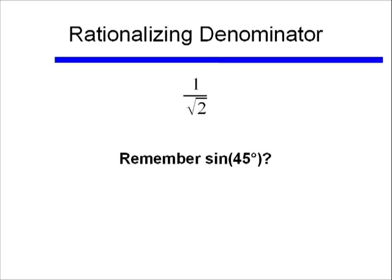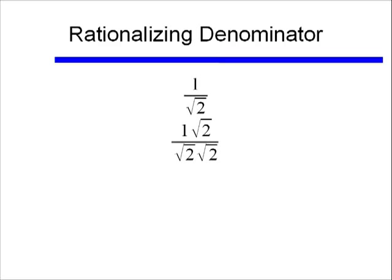Okay, rationalizing the denominator. Remember when we talked about sine of 45 degrees way back in, I don't know, video 3? We couldn't leave the sine of 45 degrees as 1 over square root of 2. What we did is we multiplied the numerator and the denominator by square root of 2. And when we did that, we ended up with square root of 2 over 2. We rationalized the denominator.